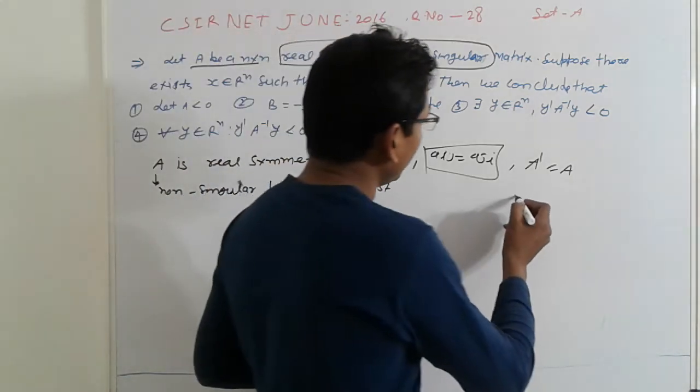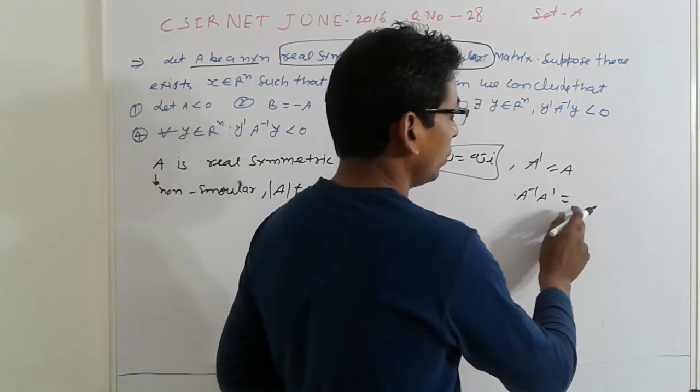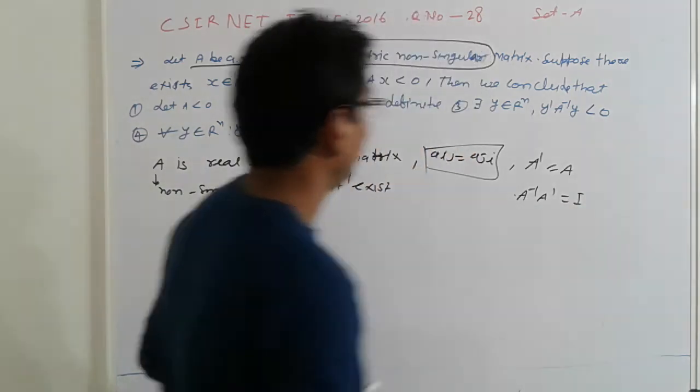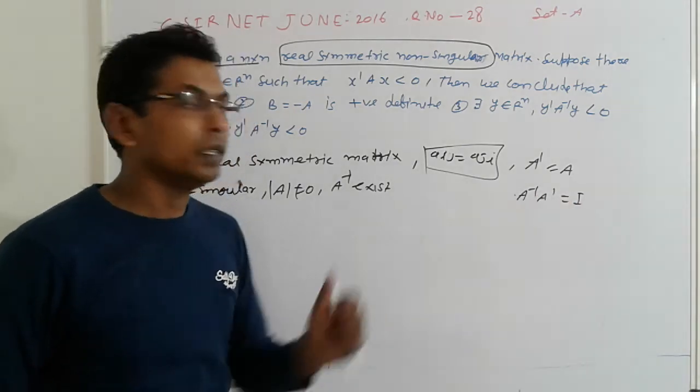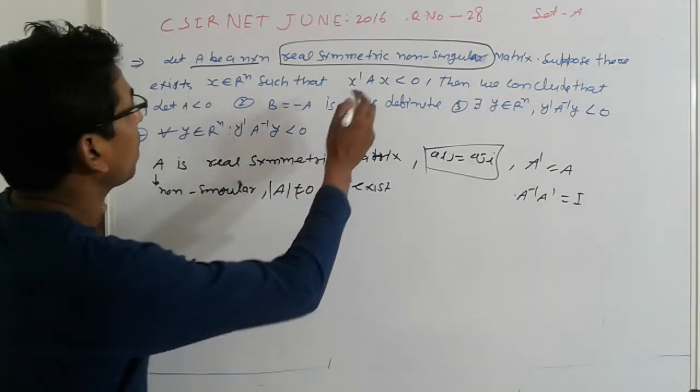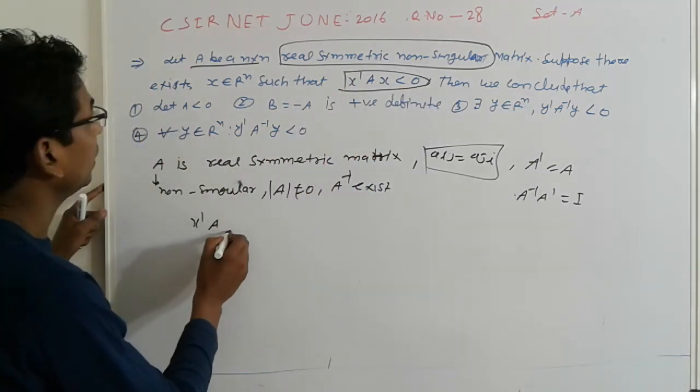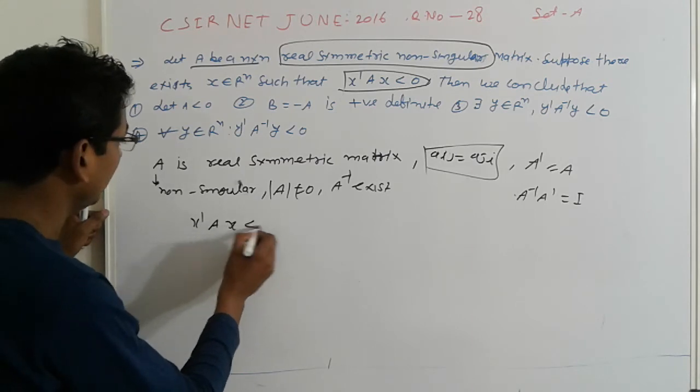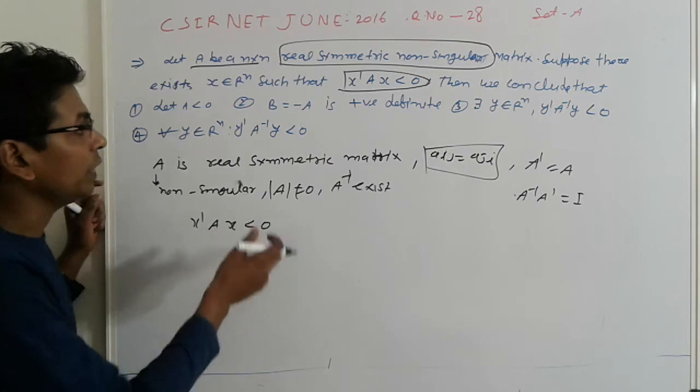Again we can say that A inverse A dash is equal to A inverse A transpose equal to A. Simple work. So according to this here friends that is given, so now A dash A x dash A x less than 0. So in that case what do you do here? Then we can solve it.